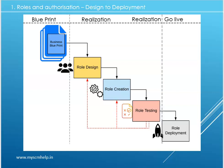During the realization phase, we first start with designing the roles — that is called role design. Then we create those roles, followed by role testing, and once testing is done we proceed to role deployment. This is a staggered process, and we will look into each stage in more detail in the upcoming slides.